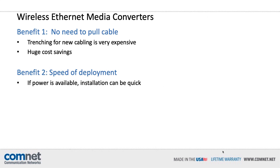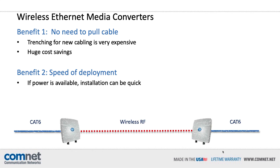Last in this series are wireless Ethernet media converters. This is a little different in that we are converting the zeros and ones of Ethernet from an electronic signal to a radio frequency signal and then back again. The number one reason people use wireless is so that they don't have to put in the cabling infrastructure necessary to carry the signal. Trenching for new cabling is very expensive, complicated, and difficult to accomplish in many environments, representing a huge cost savings by using wireless transmission methods.